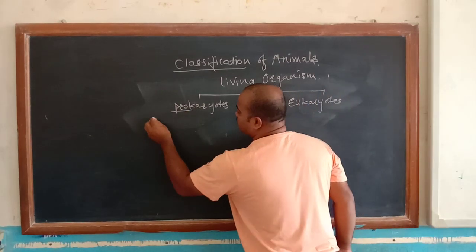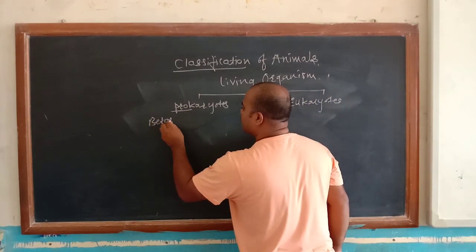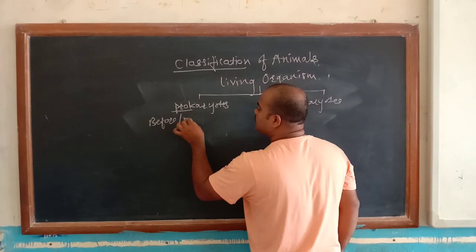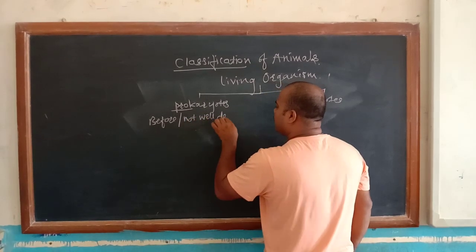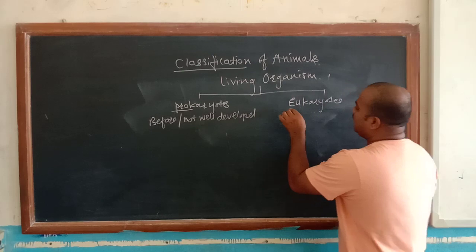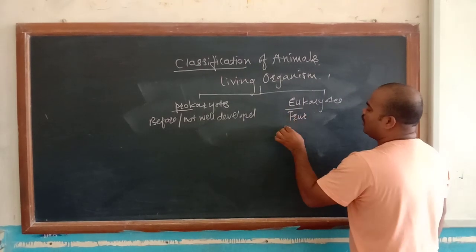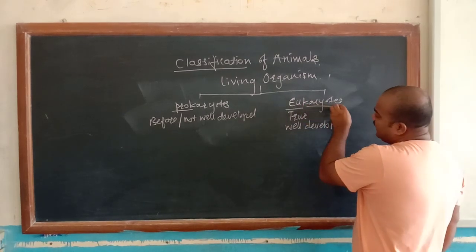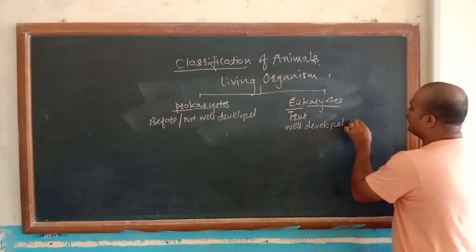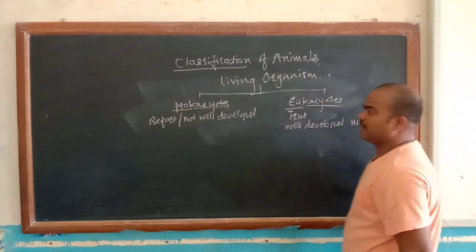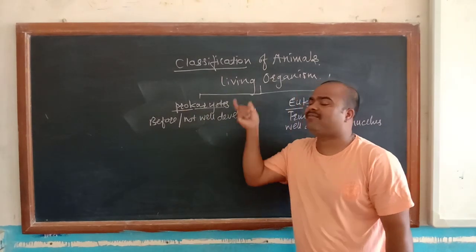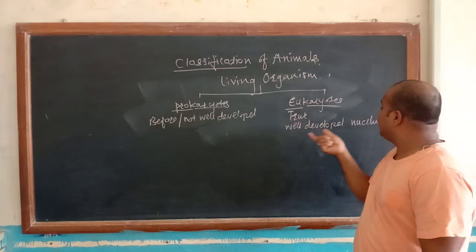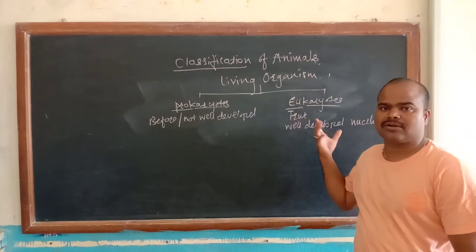Pro means before, but here we will take it as not well developed. And eu means true or well developed nucleus. So prokaryotes means not well-developed nucleus or cell organs, and eukaryotes means true or well-developed nucleus, cells, or organisms.